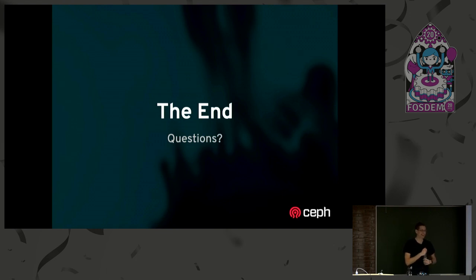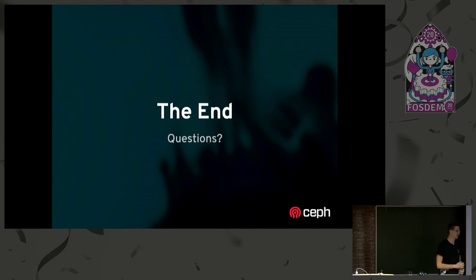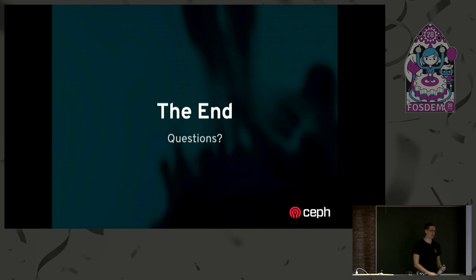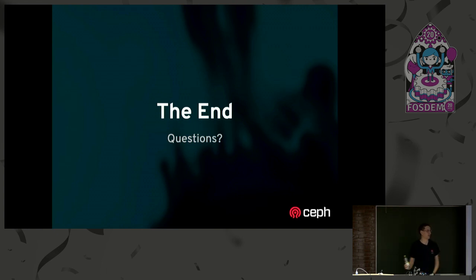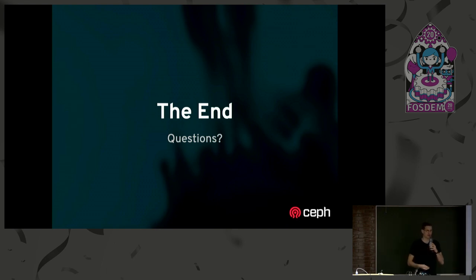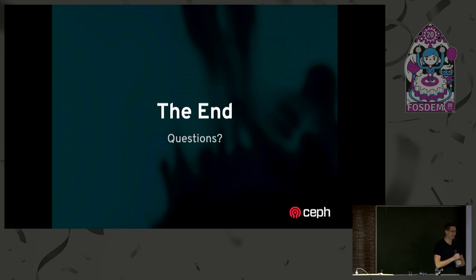Q&A: Why the half-life of 12 hours? It was completely arbitrary — I needed to write a number down and it's configurable. We want to not immediately forget if a connection died, but also want it to age out. When is this coming out? It's going to be in before Octopus is released at the end of the month or in March, or else I'm going to be in a lot of trouble.